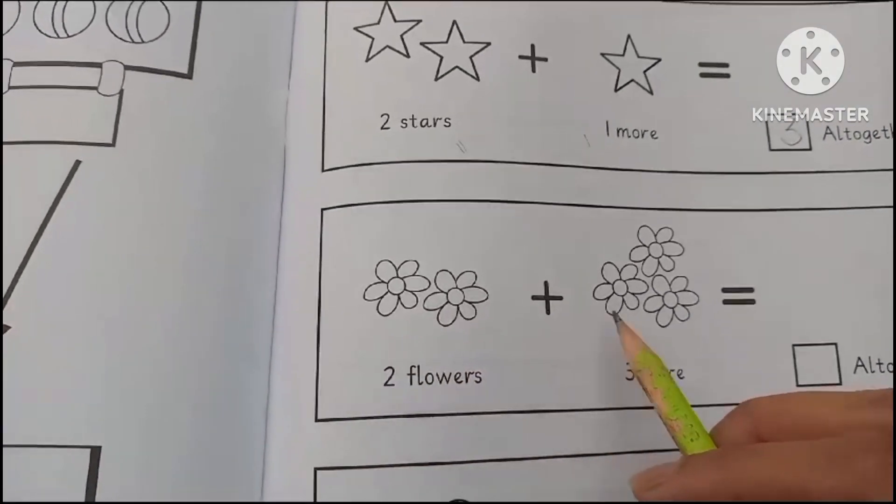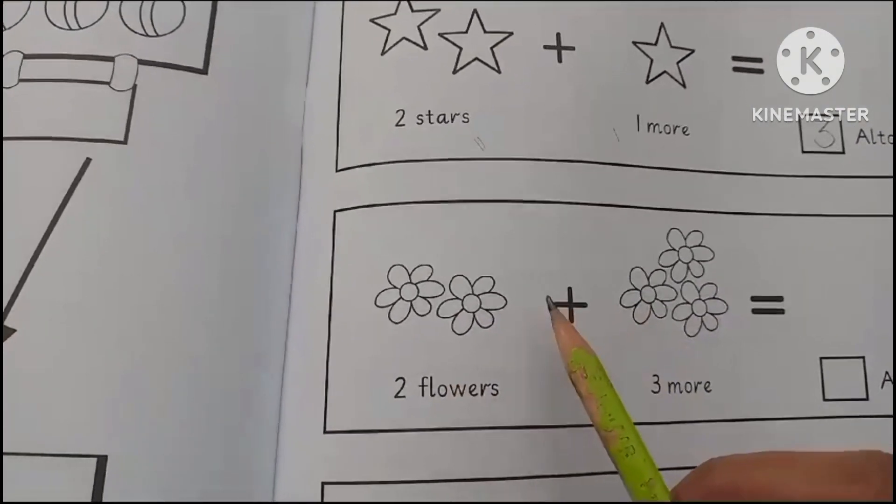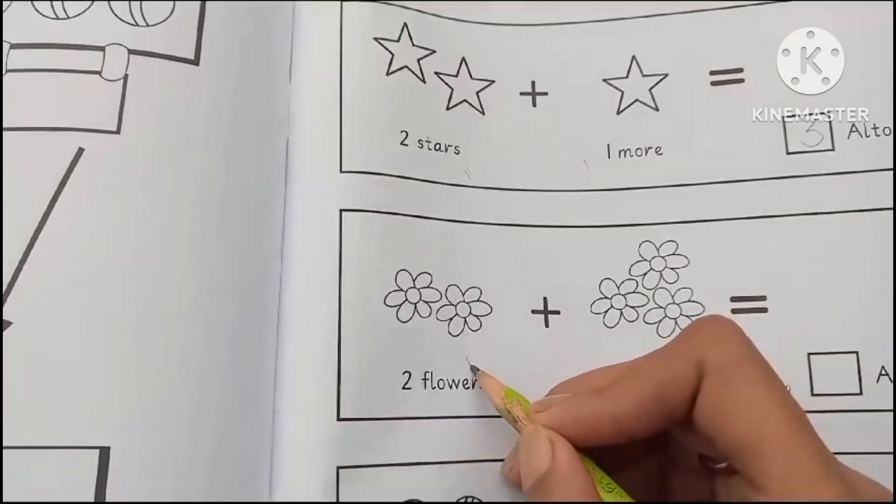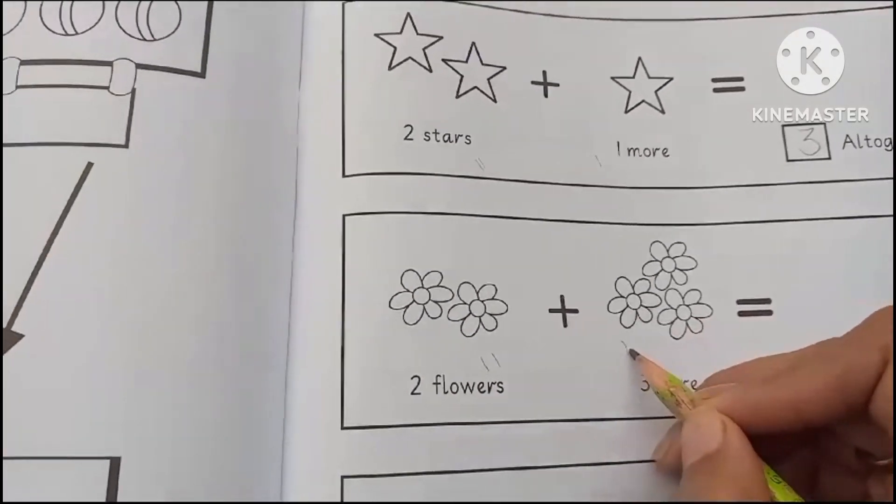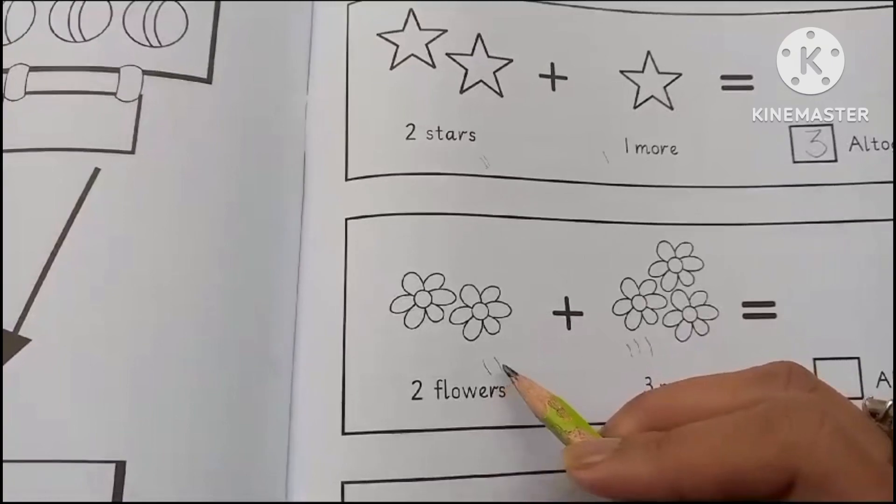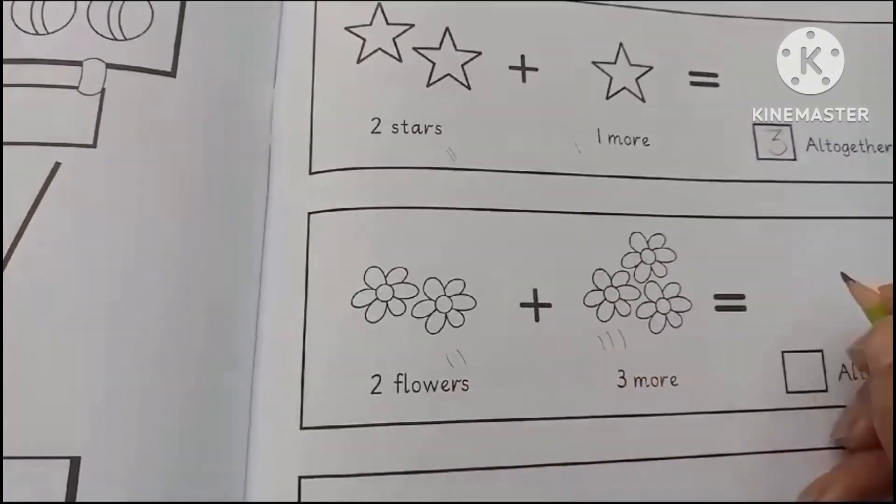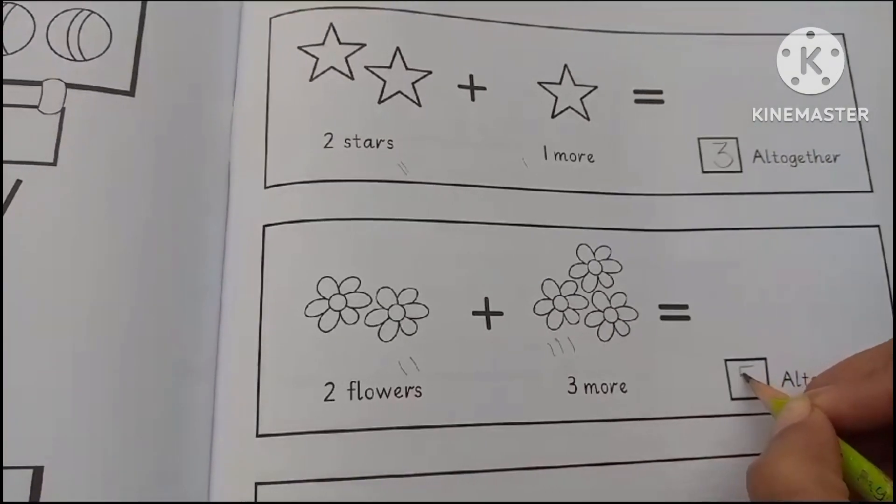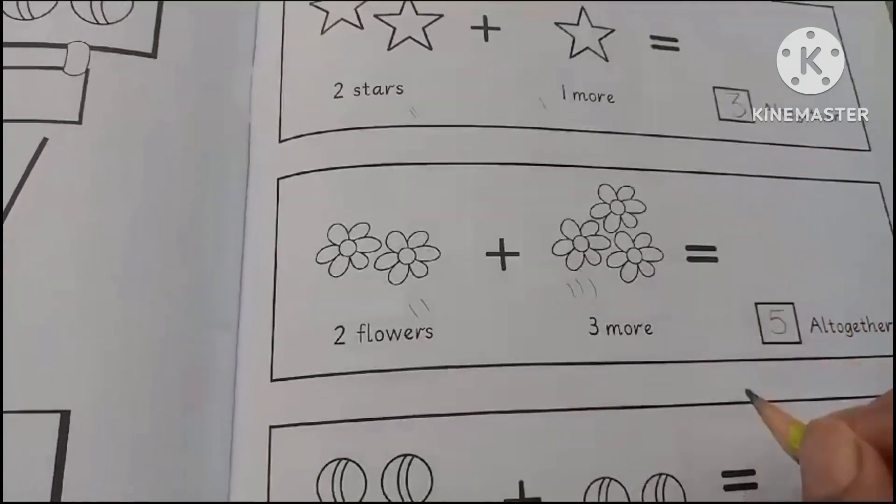There are 2 flowers and there are 3 flowers. How many all together? 1, 2. 1, 2, 3. 1, 2, 3, 4, 5. There are 5 flowers all together.